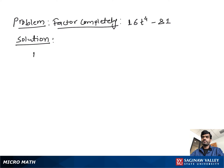Factor completely 16t to the 4th minus 81. We don't have any common factor, so what to do? We make both terms in the square form to make it easy to solve.